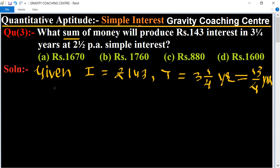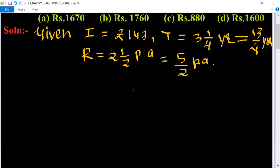And the rate of interest equals two and one-half per annum, equal to five upon two per annum. So we know that the formula of sum means principal equal to hundred multiply interest upon T into R.